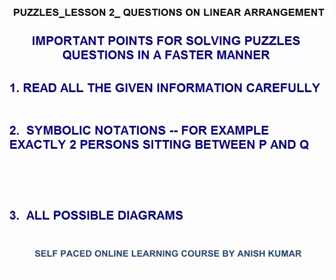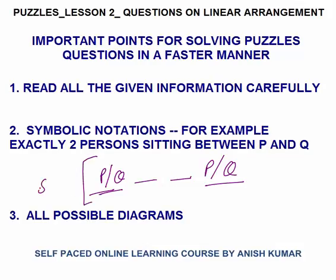Second thing, very important, is symbolic notation. For example, exactly two persons are sitting between P and Q. I will represent this statement as P slash Q, with exactly two persons between them. We don't know who is on the left or right, so I have written P slash Q. This is the symbolic notation.